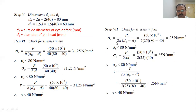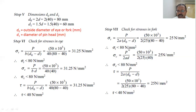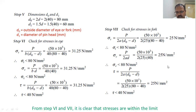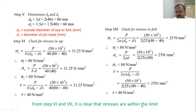Similarly, checking stresses in the fork: using the tensile stress equation the value comes out to be 25 N/mm²; using the crushing stress equation it is again 25 N/mm²; and tau is also 25 N/mm². These are all less than the permissible values of 80 N/mm² against tension, 80 N/mm² against crushing, and 40 N/mm² against shear. Therefore, the fork is safe against tension, compression, and shear. The stresses are well within limits and the design is complete.